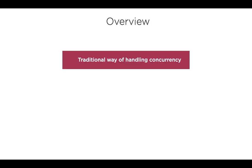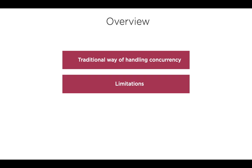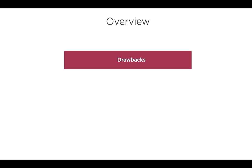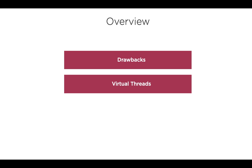In this video, we'll start off understanding how the JVM currently handles threads and concurrency. We will examine its limitations, evaluate some options to overcome limitations, say by using asynchronous programming, talk about the downside of asynchronous programming, and then talk about virtual threads, which allows a Java application to scale without the downside and complexity of asynchronous programming.